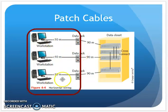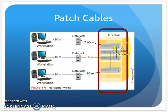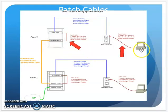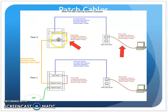In a commercial environment, we have the workstation with a patch cable plugged into a data outlet on the wall. On the other end, in the closet, a patch cable goes from the patch panel down to a switch. So: patch cable from the computer to the wall outlet, and patch cable from the patch panel to the network switch.